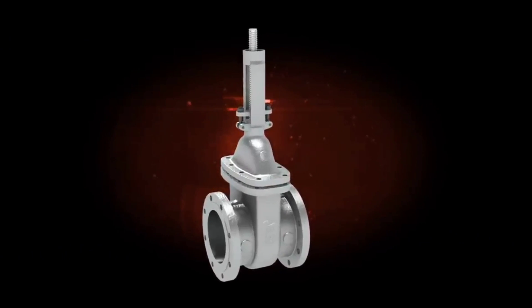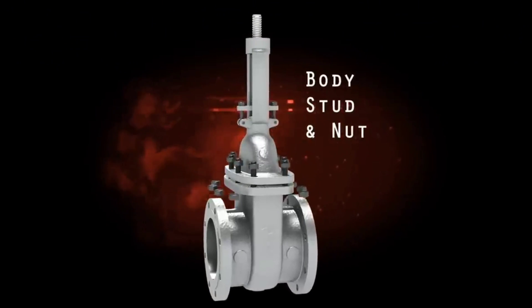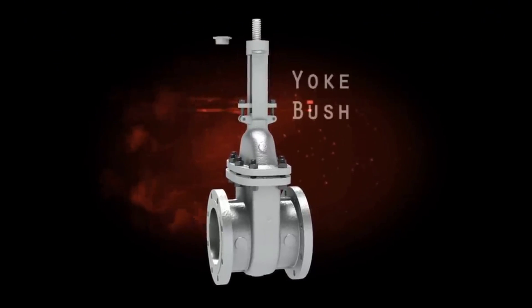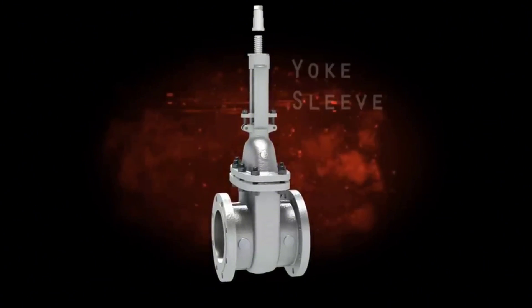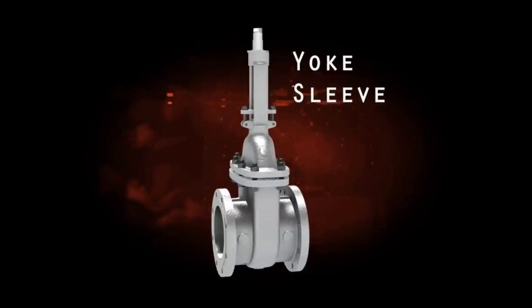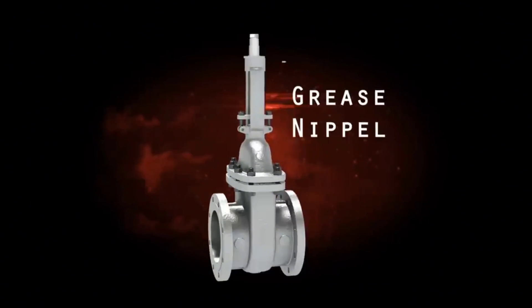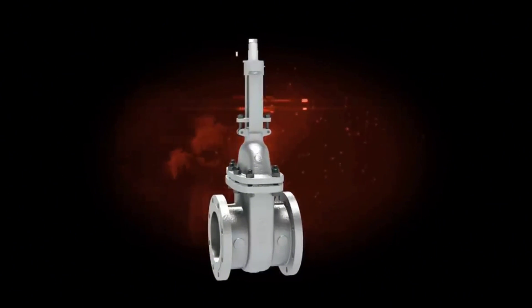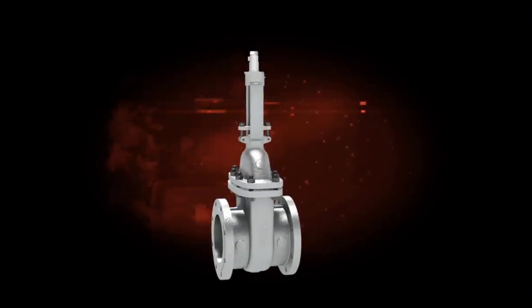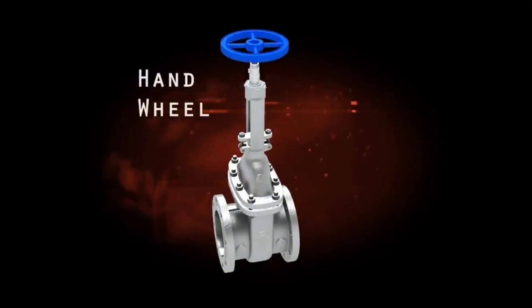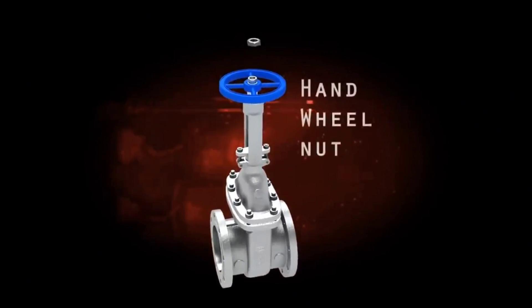Then bonnet fixing to the body with stud and nuts. Continue to completing gate valve: installing yoke bush, installing yoke sleeve, grease nipple, key, hand wheel, and hand wheel nut.